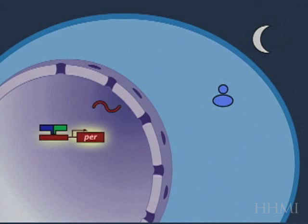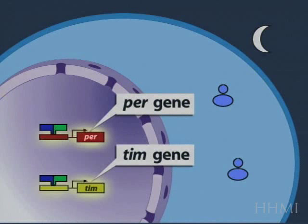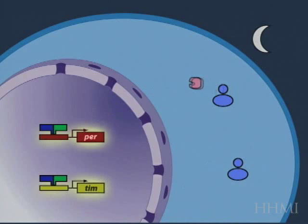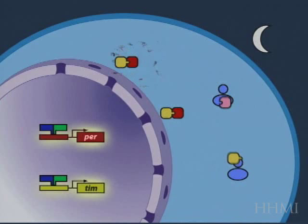So, here we have the period gene and the timeless gene, and they are both driven, transcription is driven by clock and cycle, which binds to both promoters, so these proteins accumulate, and the RNA accumulates, is synthesized.